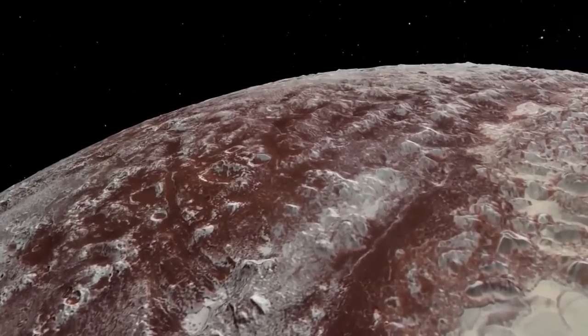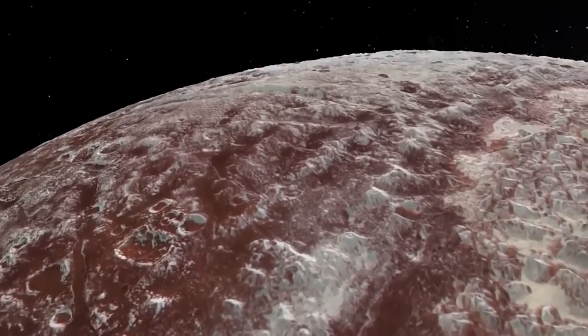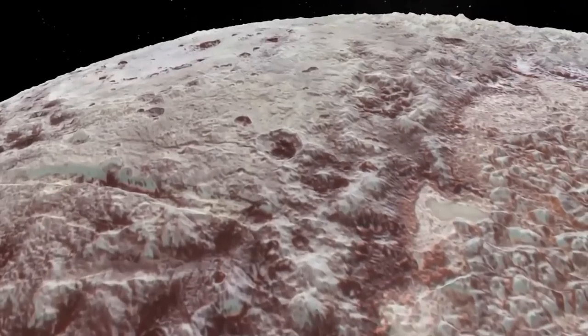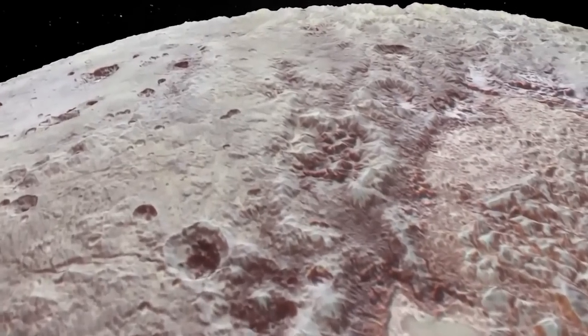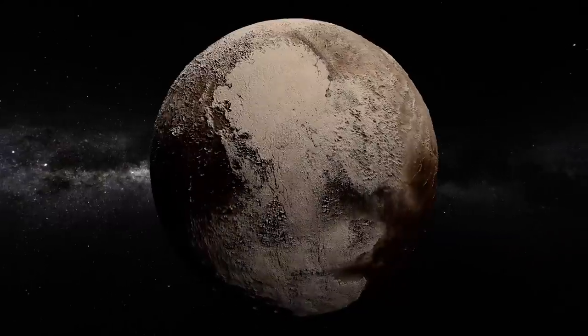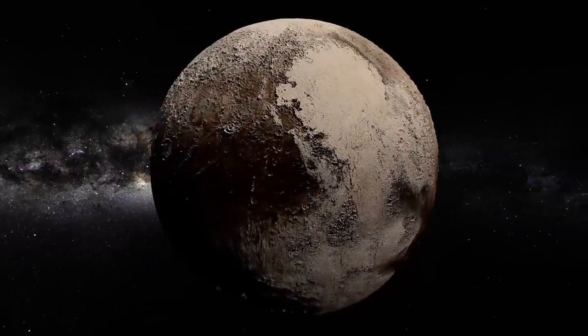Its average temperature, due to its location at the edge of our solar system, is approximately negative 230 degrees Celsius, or negative 382 degrees Fahrenheit. This dwarf planet is mostly composed of rocks, ice, methane, and nitrogen.